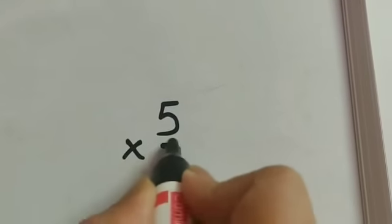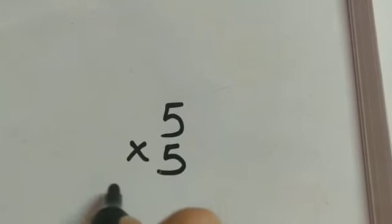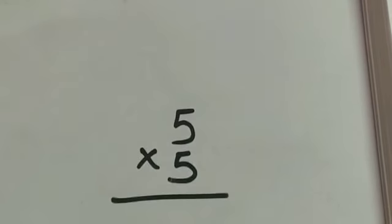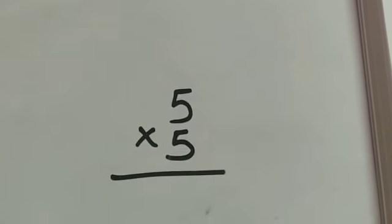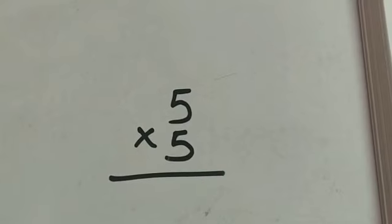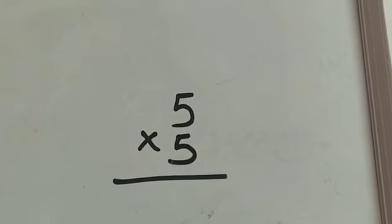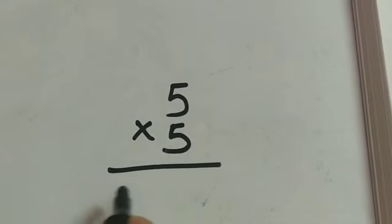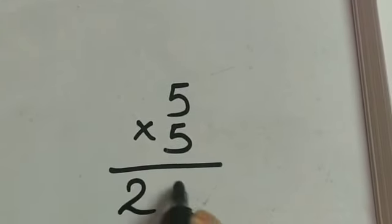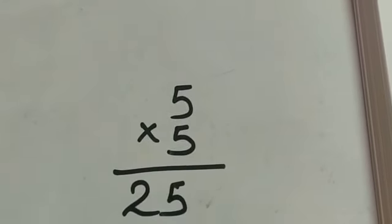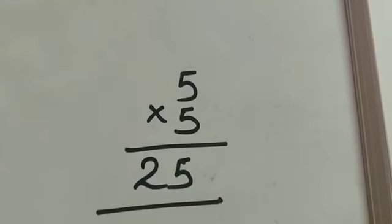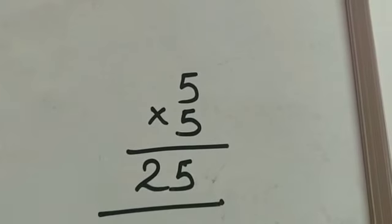5 into 5. 5 1's are 5, 5 2's are 10, 5 3's are 15, 5 4's are 20, 5 5's are 25. So 25 is the answer.